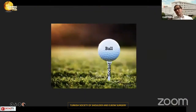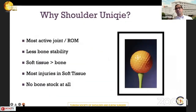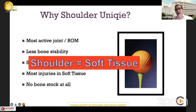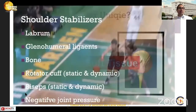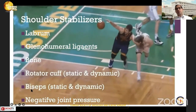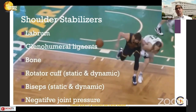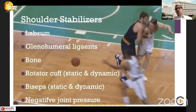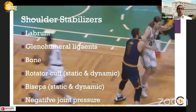It's very famous that the shoulder joint resembles a golf ball on a tee — the ball is the humeral head and we have a very small socket. Why is the shoulder unique? Because it's the most active joint in the body with less bone stability and very high soft tissue stability. In my practice, I always assess shoulder stability in terms of soft tissue balance, so we need to realize the stabilizers of the shoulder.